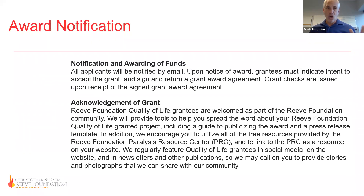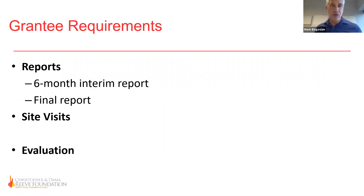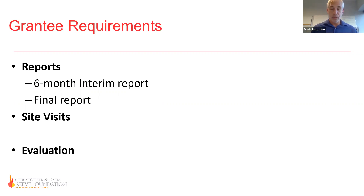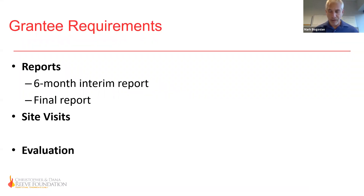The internal review committee reviews top applications, scores and ranks them, discusses and evaluates them at a committee meeting, and chooses grants based on external reviewers' comments and their own ranking. You will receive notification of being awarded or not. If awarded, there's a six-month interim report that lets us know the project is proceeding as planned — if not, we'll talk with you. We really do hope to be in contact throughout the year.